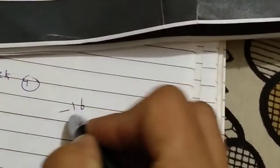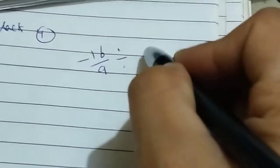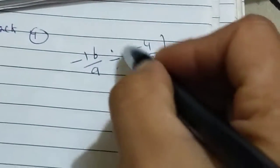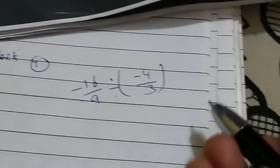Last one is the product of two rational numbers is minus sixteen by nine. Product is minus sixteen by nine. One number is minus four by three. So what is the other? We divide product by first number.